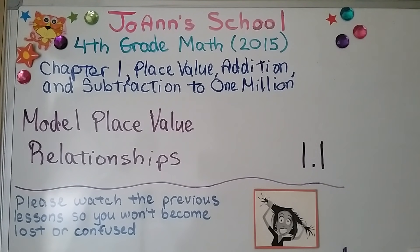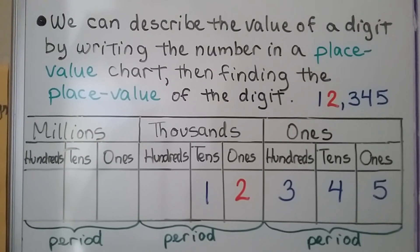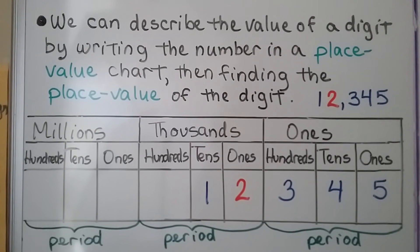Fourth grade math lesson 1.1: model place value relationships. We can describe the value of a digit by writing the number in a place value chart, then finding the place value of the digit.